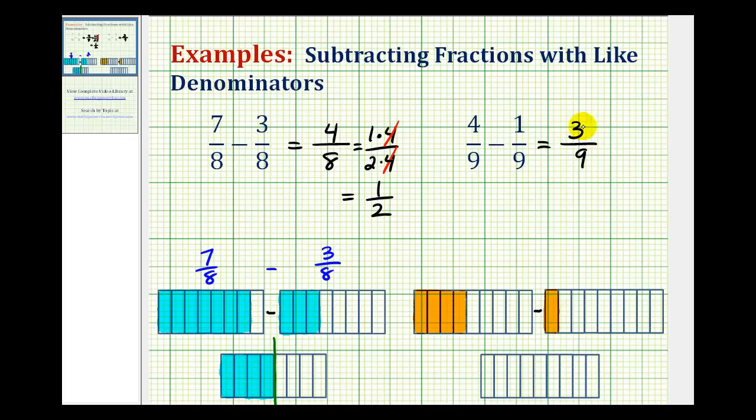But again, this fraction is going to simplify, because 3 and 9 share a common factor of 3. And again, just to show this, we could write 3 as 1 times 3, and 9 as 3 times 3. 3 over 3 simplifies to 1, leaving us with our simplified difference of 1 third.